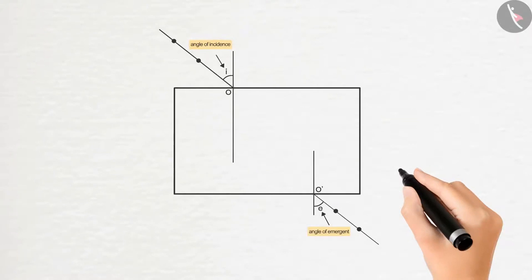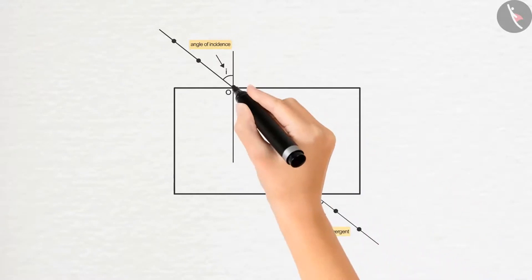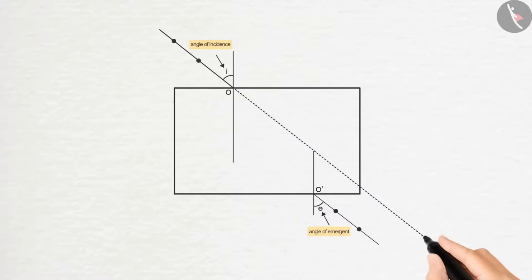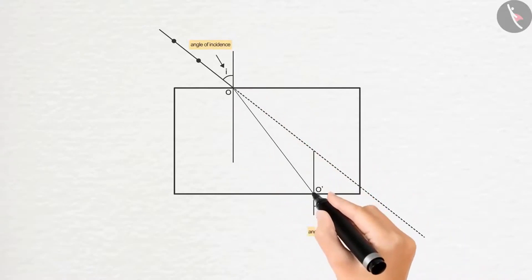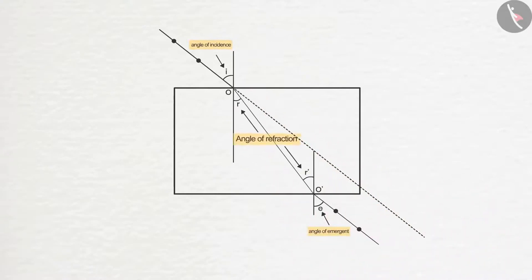Here the angle of refraction will be formed instead of the angle of reflection. Produce a straight line from the marks of the first two pins, then join O and O dash. A deflection can be seen between both the lines, or it can be said that the ray of light changed its path while passing through the glass slab.